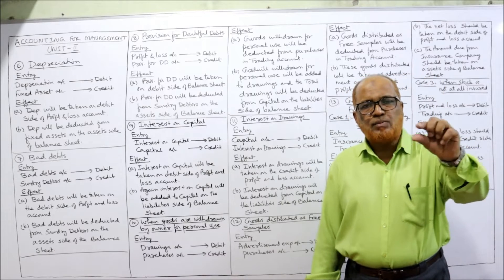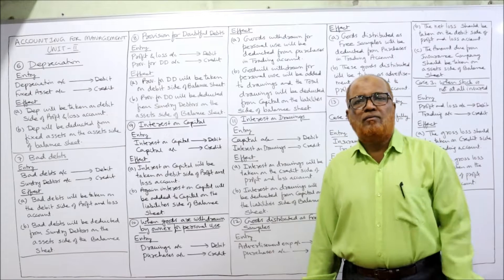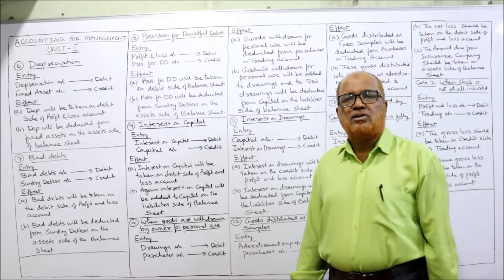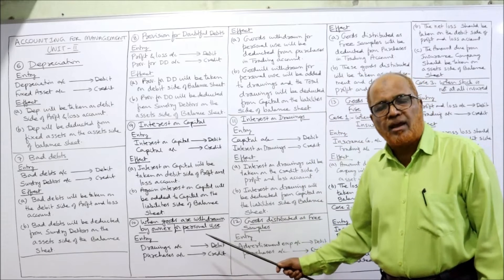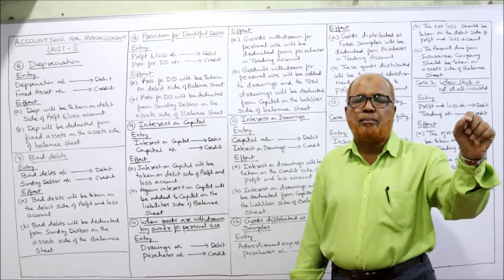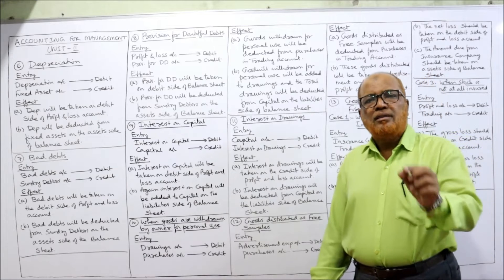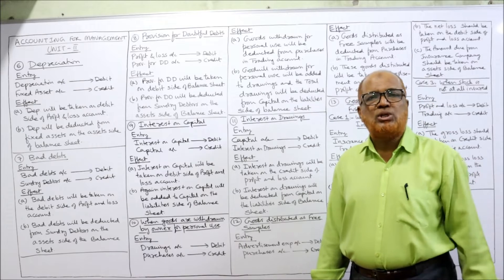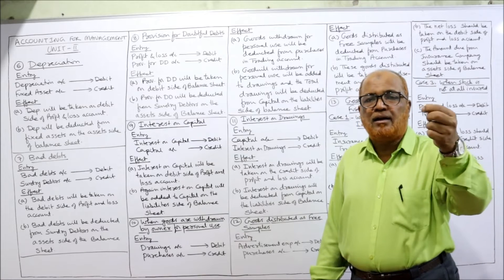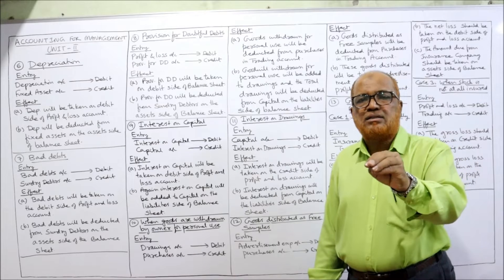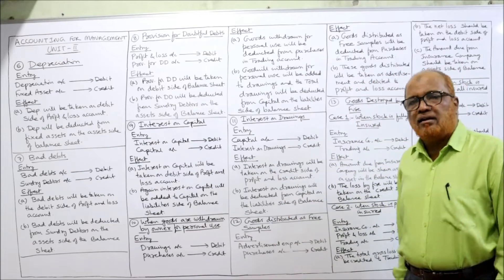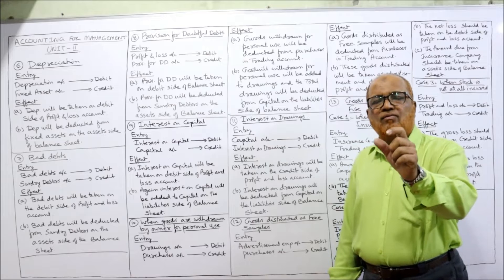The next adjustment is when goods are withdrawn by the owner for personal use — called drawings. The entry is: Drawings Account debit, Purchases Account credit. This is very important. The effect: the goods withdrawn for personal use are deducted from purchases in the Trading Account. Secondly, these goods are added to other drawings, and total drawings are deducted from capital on the liability side of the balance sheet.